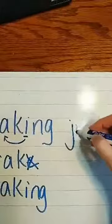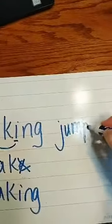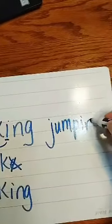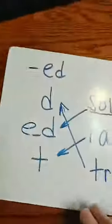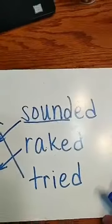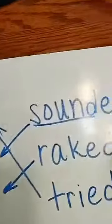If it doesn't end in an E, like jump, we just put ing on the end. Okay? So now, when we put ed on these words, let's take a look at them. Okay? Let's look at rake.